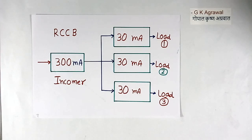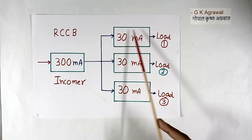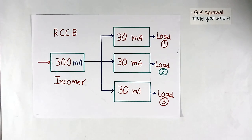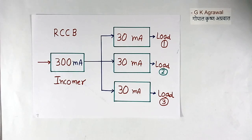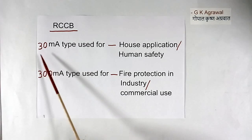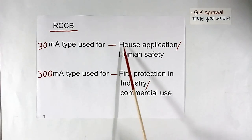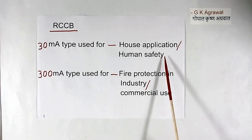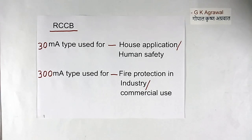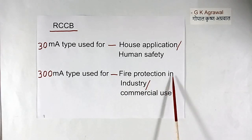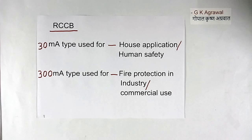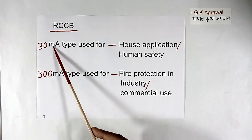Here I have shown 3 sub-RCCBs; there may be 4 or 5. These 30 mA RCCBs will provide protection to humans. If we have a big building with many flats, the incomer may have the 300 mA type, and every flat may have a 30 mA type RCCB. The 30 mA type RCCBs are used in houses for human safety, to protect humans from electrical shock. The 300 mA type RCCB is used for fire protection in industry and commercial buildings, or if we have the frequent tripping problem. But then both types will have to be used.